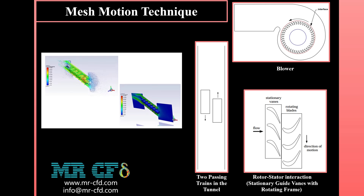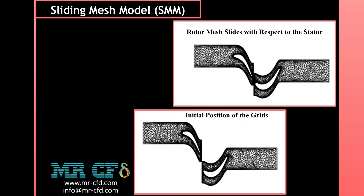The sliding mesh model is the most accurate method for simulating flows in multiple moving reference frames, but it is also the most computationally demanding. In the sliding mesh technique, two or more cell zones are used. Each cell zone is bounded by at least one interface zone where it meets the opposing cell zone. The two cell zones move relative to each other along the grid interface, which must be positioned so that it has fluid cells on both sides — for example, in the fluid region between the rotor and stator.